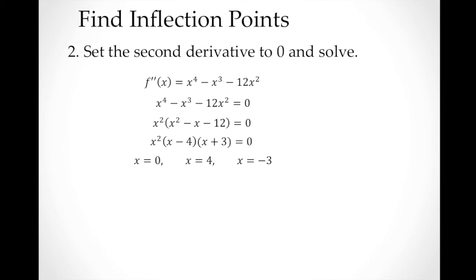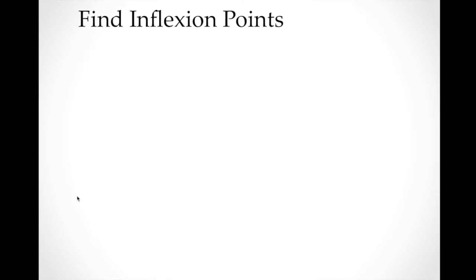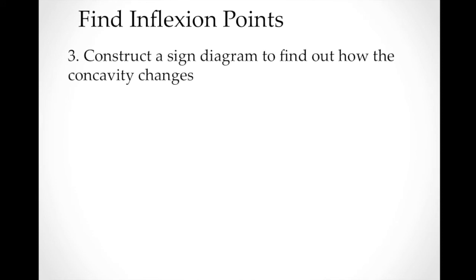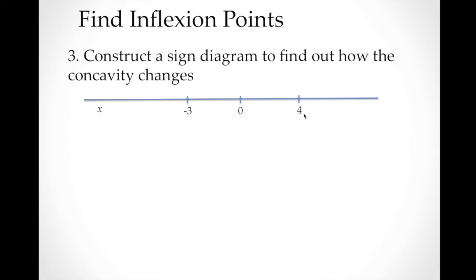These are the solutions to f''(x) = 0, but we cannot always conclude that all of these are inflection points. We cannot say that x = 0, x = 4, and x = −3 are automatically inflection points. One more step is needed: we must construct a sign diagram to clearly see if there is a change in concavity. The sign diagram begins with a number line, arranging the solutions from left to right: −3, then 0, then 4.